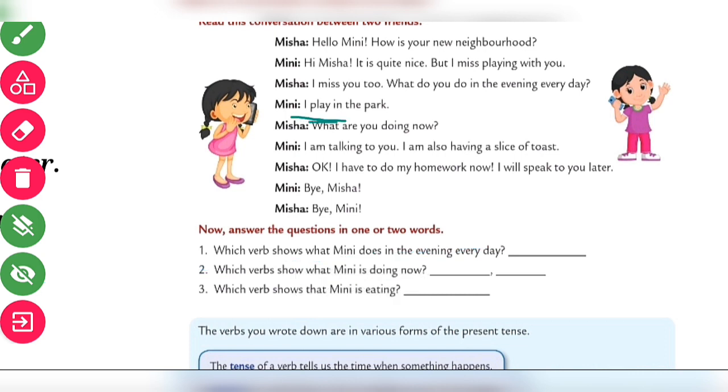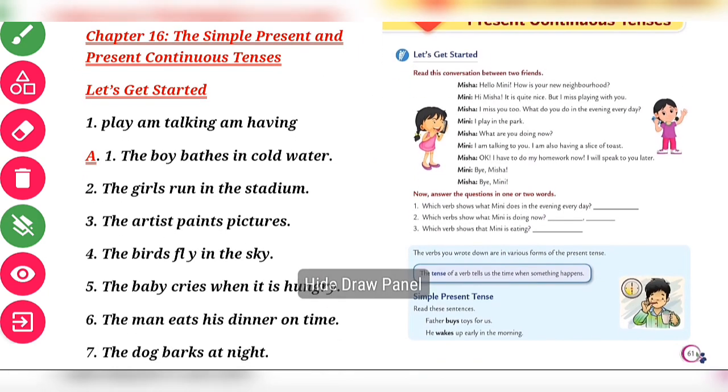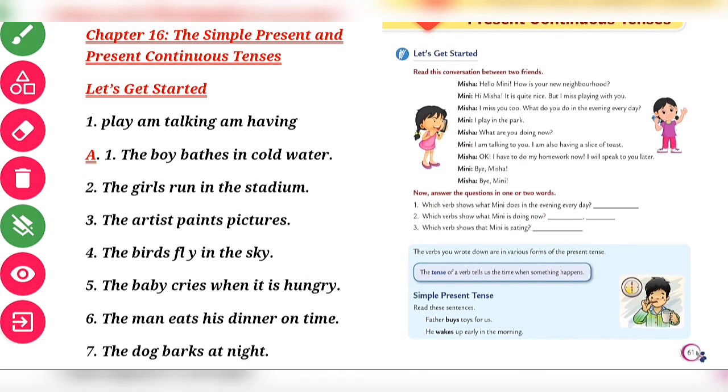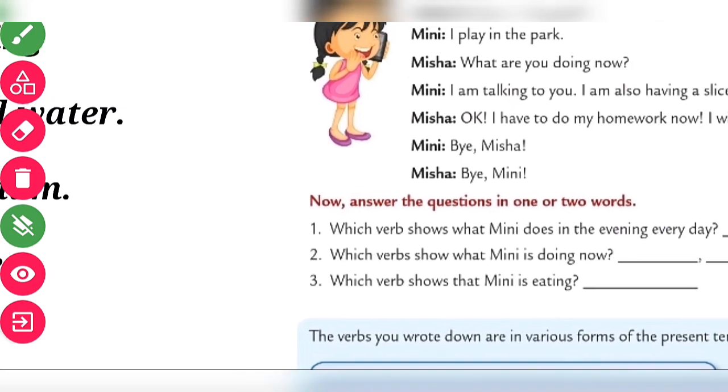What do you do? I play in the park. So the first answer is play. Which verb shows what Mini is doing now? I'm talking and having a slice of toast. So talking, and you can write eating, that's okay. Mini is eating what? I am talking. Which verb shows that Mini is eating? I am having. Clear, I am having.